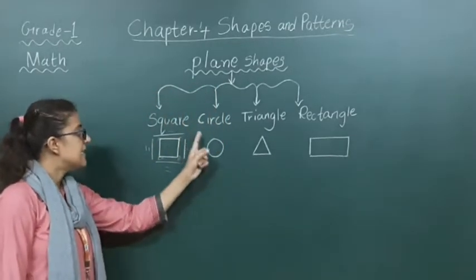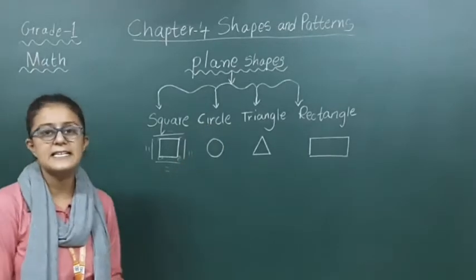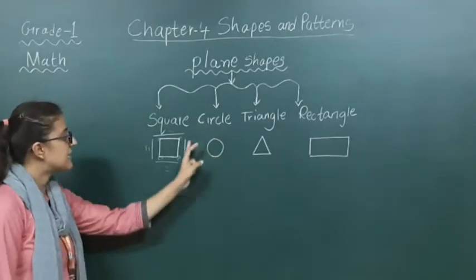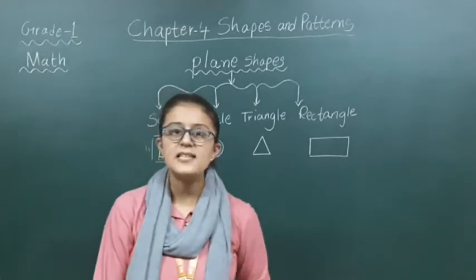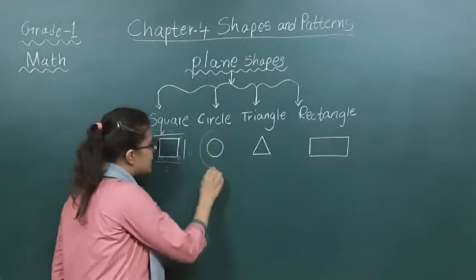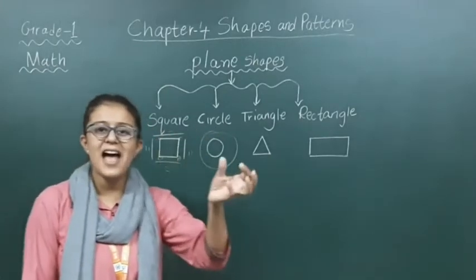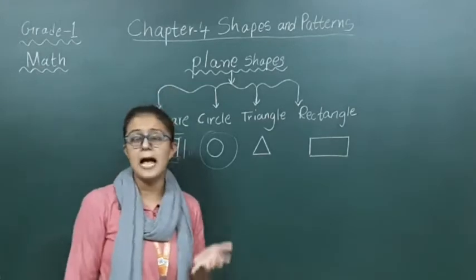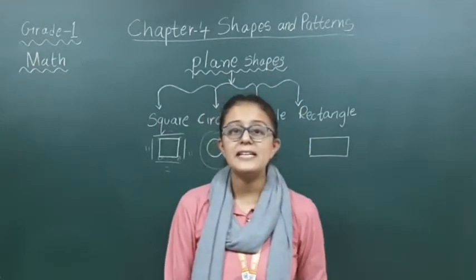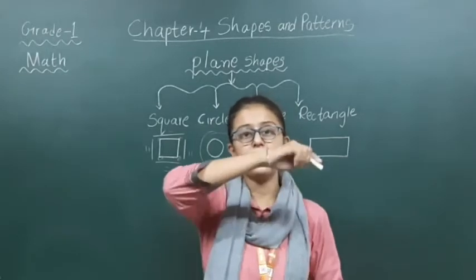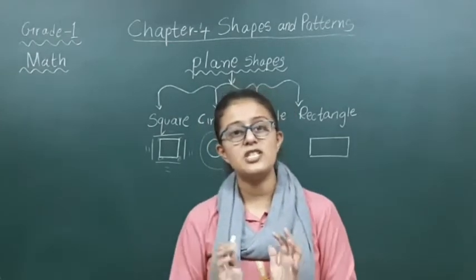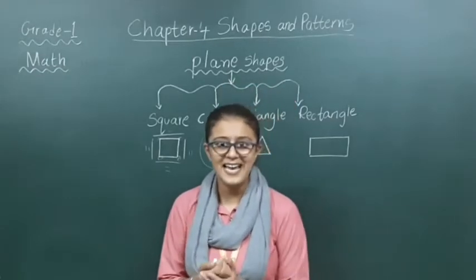Now next is circle. C-I-R-C-L-E, circle. You can see a circle is having no sides, no corners, and it is round. Circle is having no sides, no corners — it is round. Can you give some examples for circle? Your watch is a circle shape. Your bangle — mama's bangle — is a shape of circle. The plate which you eat food from is also a shape of circle.